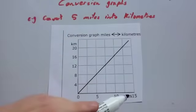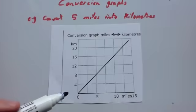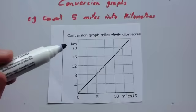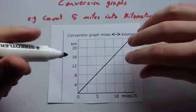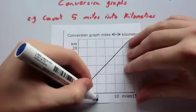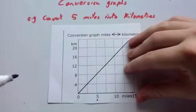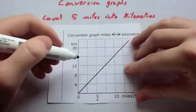If you notice, miles is along the x-axis and kilometers is along the y-axis. We're going to convert five miles into kilometers. So the first thing I would do is first of all identify where five miles is. So five miles is here. And what we're going to do is we're going to use this line to convert into kilometers.